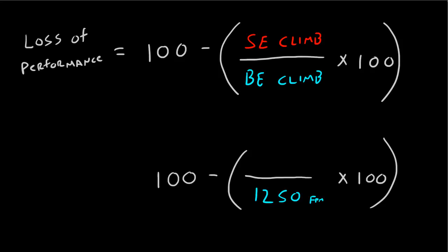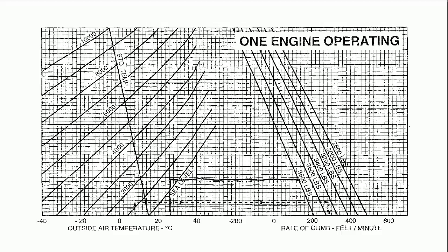Alright, and so now we'll do the same thing for a single engine. We'll say, again, the same temperature, 15 degrees Celsius. We'll come up to 1,000 feet pressure altitude. And we'll draw that across to 3,800 pounds. 3,800 pounds will come down. Now this time, we've got 0 to 200. 1, 2, 3, 4, 5, 6, 7, 8, 9, 10.